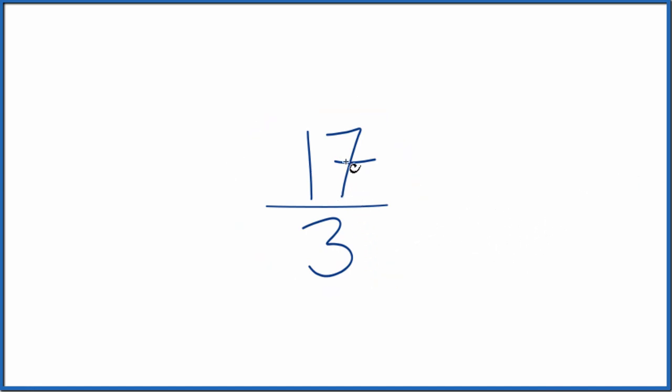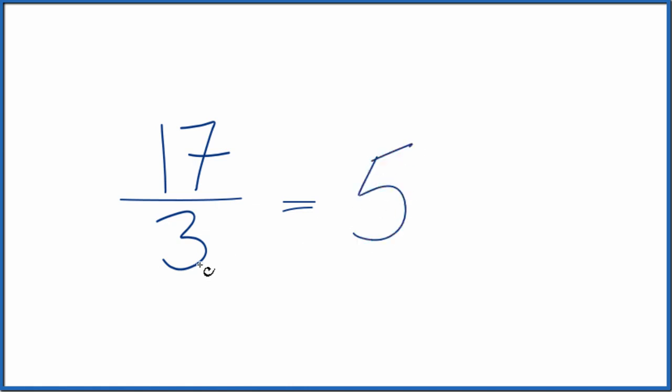The first thing we want to do is divide 17 by 3. So 3 goes into 17 5 times. 5 times 3 is 15, and we'd have a remainder of 2.